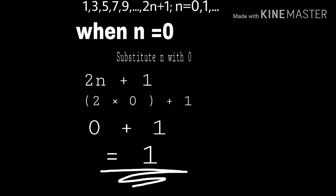That is 1, which gives our first term. When n=1, we put that into the equation: 2×1, which gives us 2 plus 1, which is 3. Remember that the numbers are in a particular order.